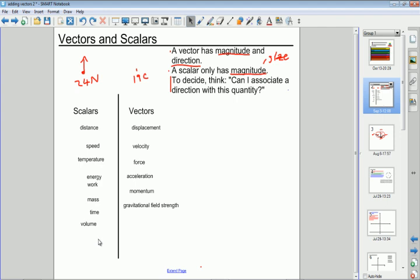Okay so that's the difference between vectors and scalars. In the next video we'll look at how to add vectors together to produce what we call a resultant vector.